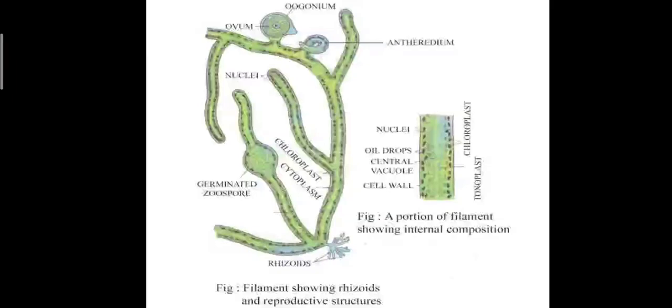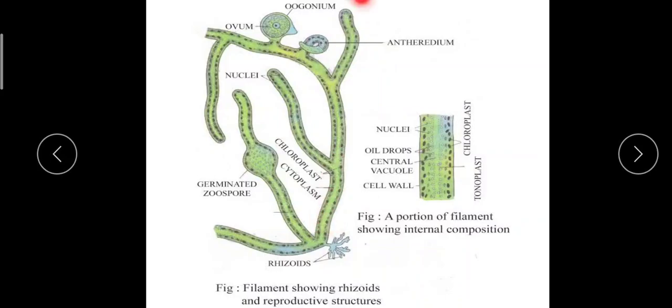It is a freshwater algae, though some species are also present in other environments. Vaucheria is a filamentous algae and this filamentous thallus or plant body represents the gametophyte. It is branched and cylindrical. There are no septas or cross walls present — it is aseptate.